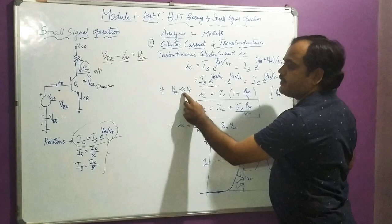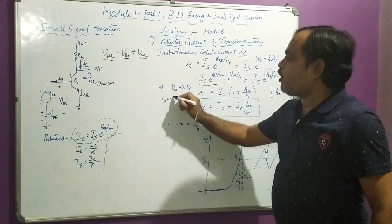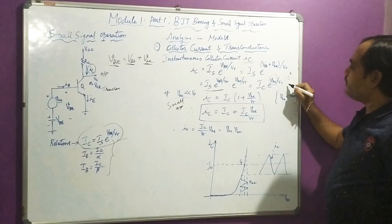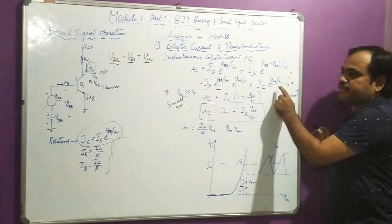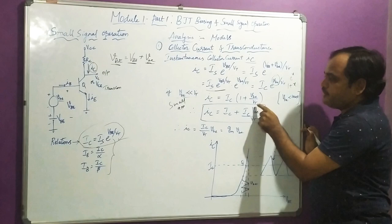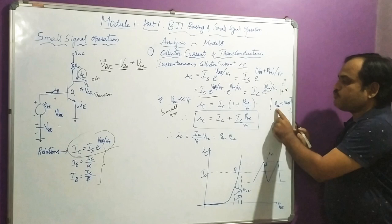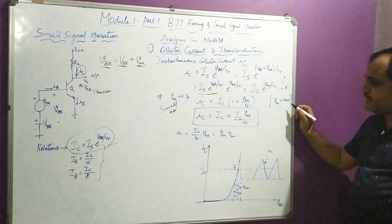Now, small vBE is a very small signal. I am considering it smaller than VT, and as soon as I do this, I am performing small signal approximation using the exponential series expansion, where e^x ≈ 1 + x for small x. Here x = vBE/VT. So I write IC × (1 + vBE/VT). This condition is valid only when the small signal voltage that is superimposed is maintained as less than 10 millivolts.